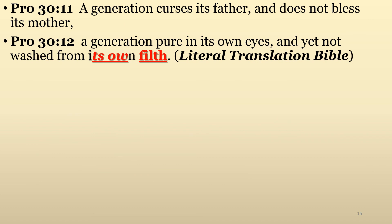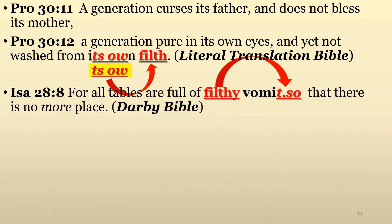Our first example is Proverbs chapter 30, verses 11 through 12: 'A generation curses its father and does not bless its mother. A generation pure in its own eyes and yet not washed from its own filth.' Then Isaiah 28, verse 8: 'For all tables are full of filthy vomit, so that there is no more place.'